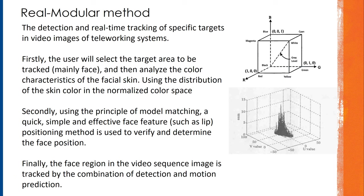I will introduce the RMM, the real-multicultural method. The reason I use this method to help finish the real-time detection and tracking is because the detection and real-time tracking of specific targets in video images works as follows: firstly, the user will select the target area to be tracked — basically the face — and then analyze the color characteristics of the facial skin, using the distribution of skin color in the normalized color space. Secondly, use the principle of model matching for a quick, simple, and effective face feature such as lips.